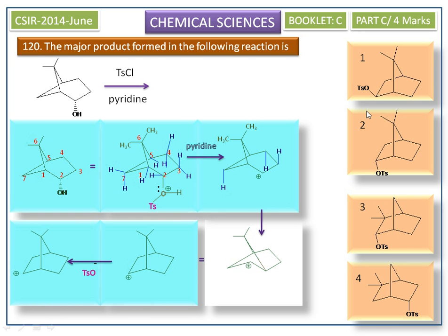Now we have a question about whether the tosylated product should correspond to option 1 or 2 — that is, equatorial or axial. In the formation of tosylate, the reaction involves breaking of the O-H bond of the alcohol, not the C-O bond.